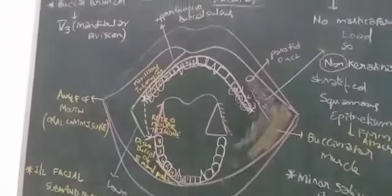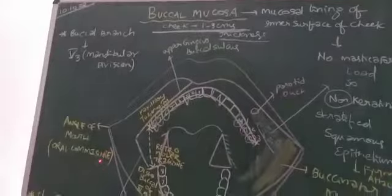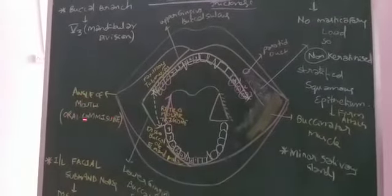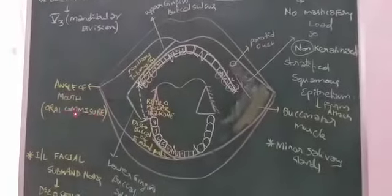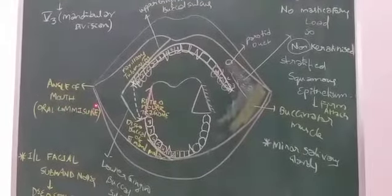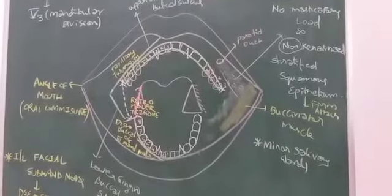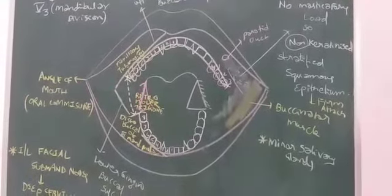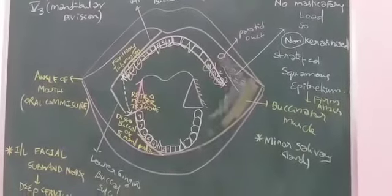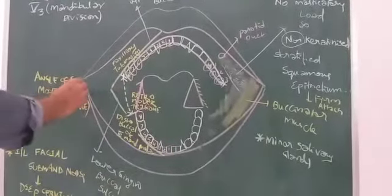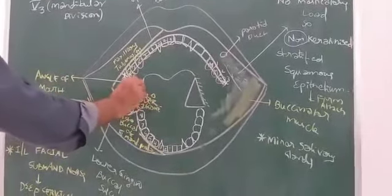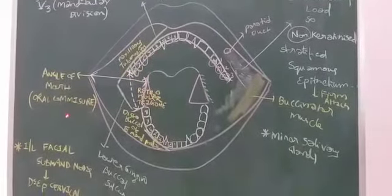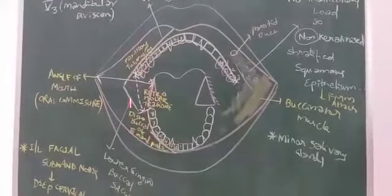Now if you come, what are the extensions of buccal mucosa? You should say from angle of the mouth, that is oral commissure, till the level of retromolar trigone, anterior part of the retromolar trigone. So from here to here will be the extension of this particular buccal mucosa till this level. This is the extension anteroposteriorly, that is oral commissure angle of the mouth.